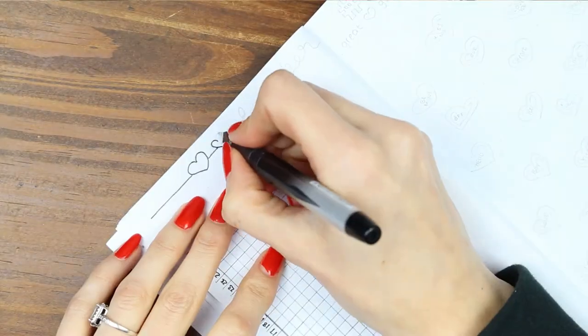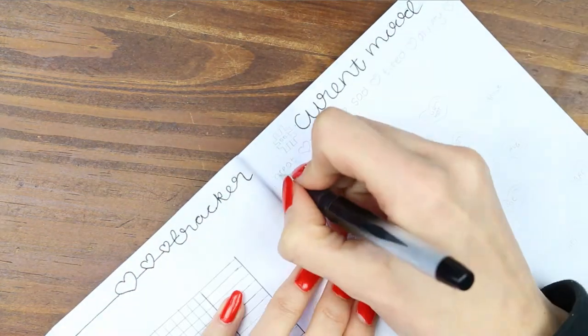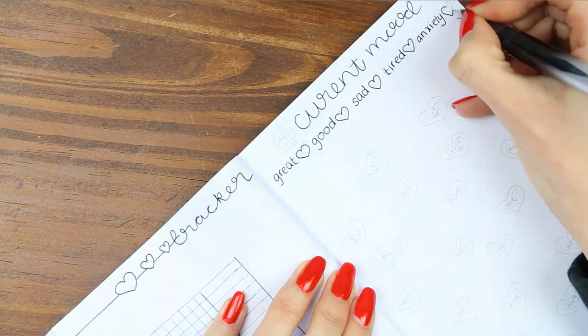Then I just labeled this tracker at the top and I thought it would be a really cool idea to do a mood tracker. And I thought what would be really sweet and fit with the theme this month is if I drew lots of little love heart sweets.